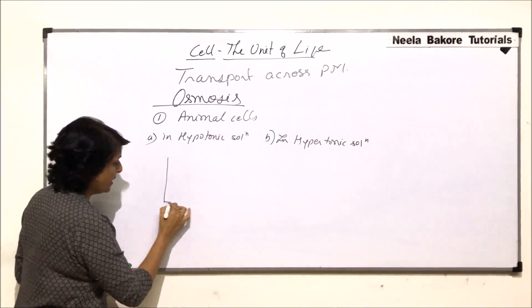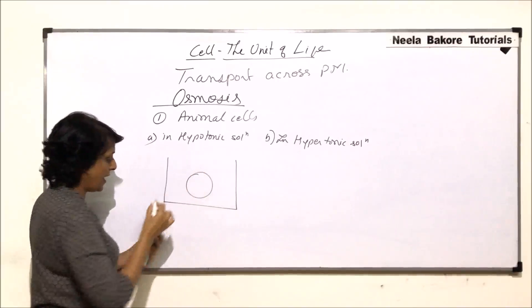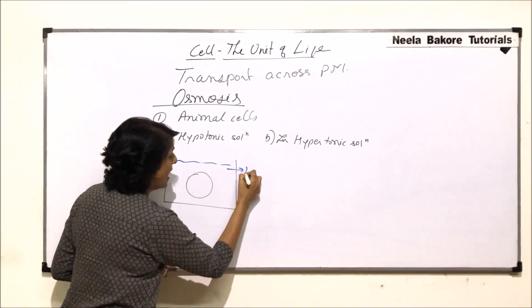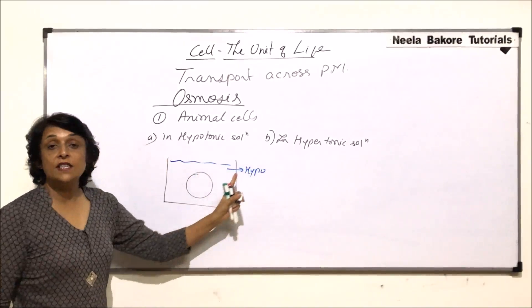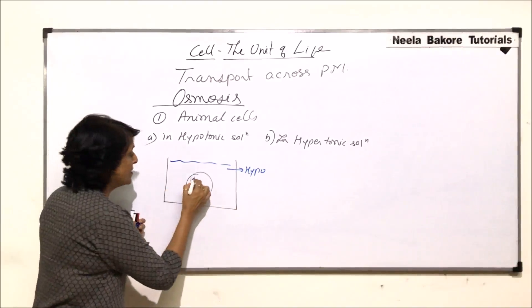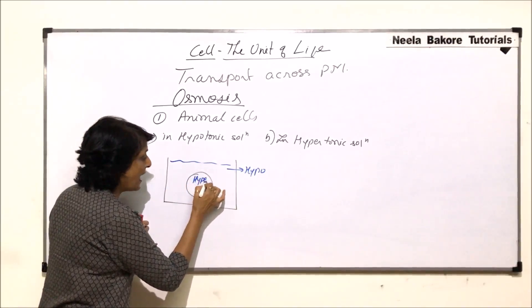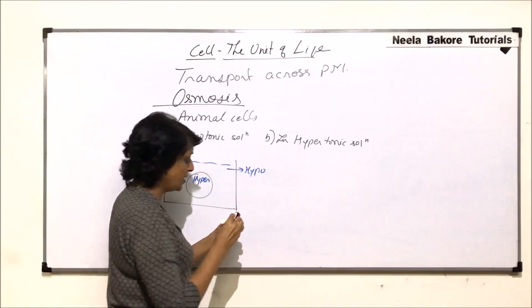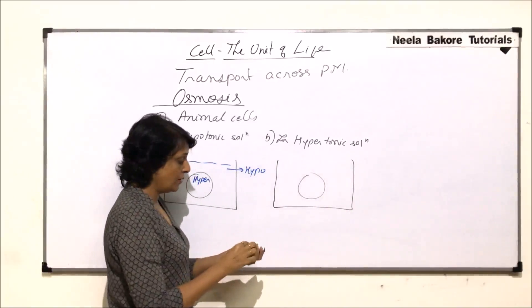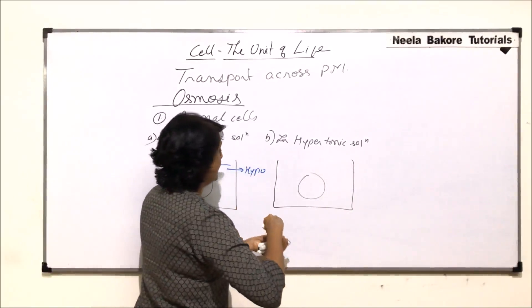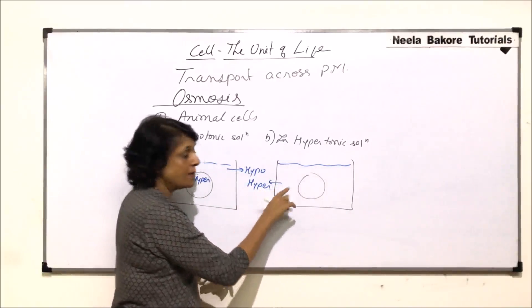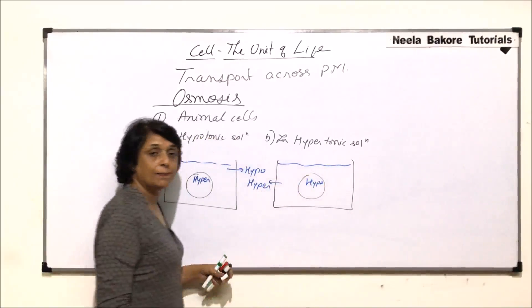If we take a beaker and place an animal cell, and the solution in which the animal cell is placed is hypotonic — if it is hypo, that means we are comparing it with what is inside the cell, so inside the cell becomes hyper. In the second situation, the outer medium is hypertonic, so the inner becomes hypotonic.